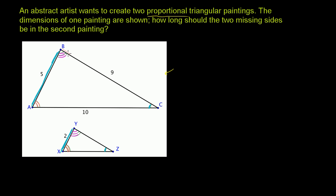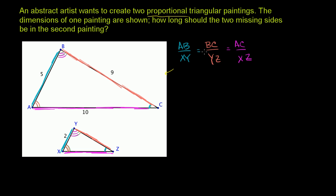Likewise, the side opposite the orange double-arc angle corresponds to the side opposite the orange double-arc angle in the other triangle — or the side between the magenta and the blue angle. And finally, the side opposite the magenta angle, which is between the blue and orange angles, corresponds to the side opposite the magenta angle in the other triangle. So the ratio AB to XY equals the ratio BC to YZ, which equals the ratio AC to XZ.